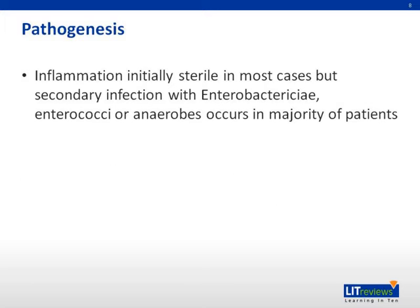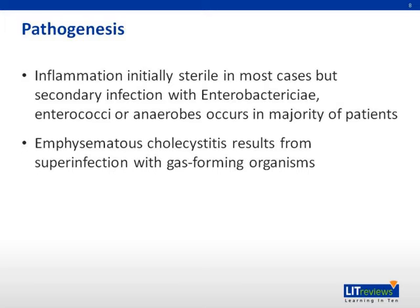The inflammation is usually sterile, but in most cases secondary infection eventually occurs with organisms such as Enterobacteriaceae, enterococci, or anaerobes. The wall of the gallbladder may undergo necrosis and become gangrenous. Bacterial superinfection with gas-forming organisms may lead to gas in the wall of the gallbladder, a severe form of cholecystitis known as emphysematous cholecystitis.